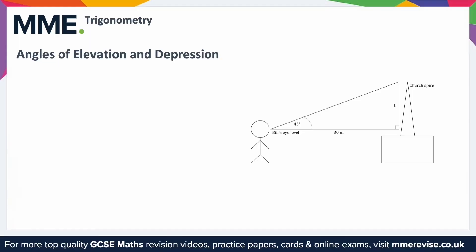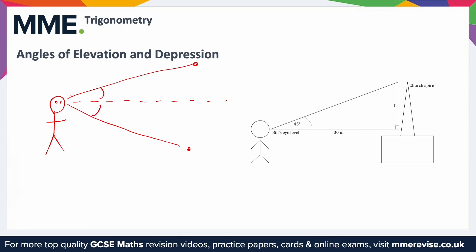If you look towards something that is not at eye level, the angle your eyes make with the object is an angle of elevation or an angle of depression. For example, if we've got a little man here and his eye level is this dotted line, and there's an object up here — if he was to look at that, this would be an angle of elevation because he's looking up. If there was an object down here, this would be an angle of depression. So it's all relative to if he was looking just straight forward.